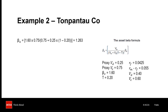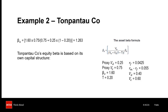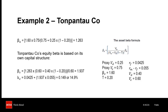The next step involves estimating Tompantarko Co's equity beta using the asset beta of 1.263 that we've just calculated, and Tompantarko Co's own capital structure, which is 40% debt and 60% equity. This gives us an equity beta of 1.937. The final step involves applying CAPM using our equity beta estimate to get a cost of equity of 14.9%.